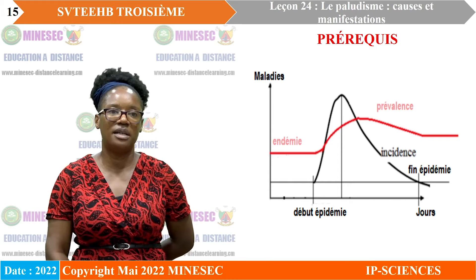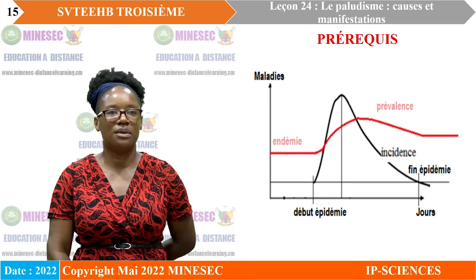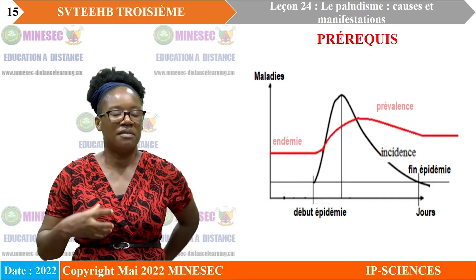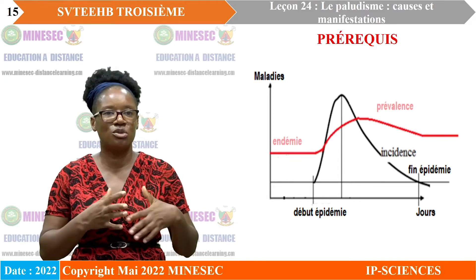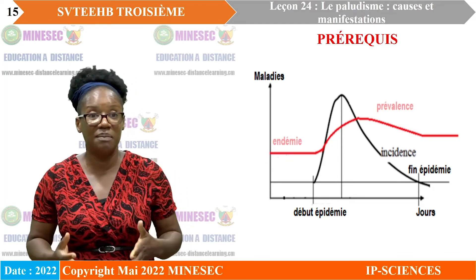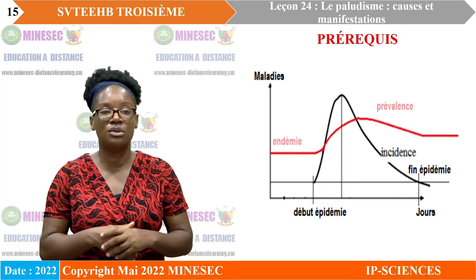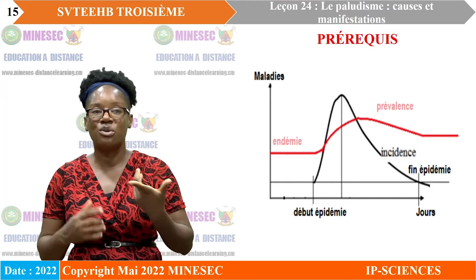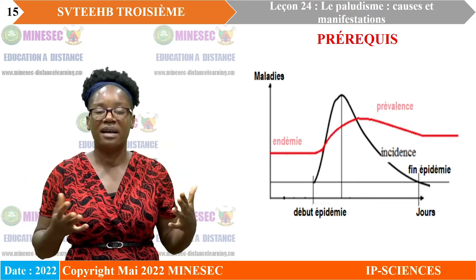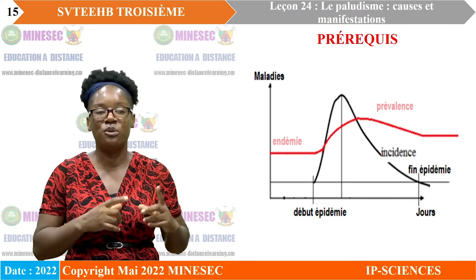Dans le cas d'une épidémie, elle commence à un moment donné, atteint un pic où tout le monde souffre de la même maladie. C'est généralement une maladie contagieuse : ça peut être la grippe, ou comme on a eu récemment, le coronavirus. Dans le cas du coronavirus, comme ça s'est étalé à la surface du monde entier, on parle donc de pandémie.